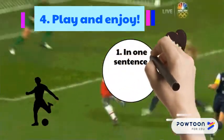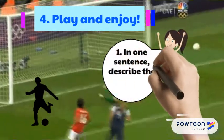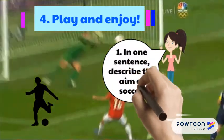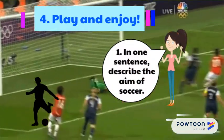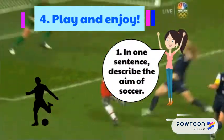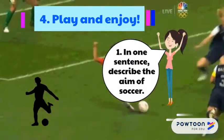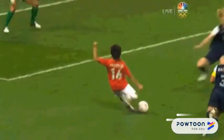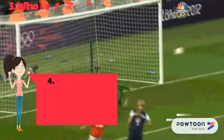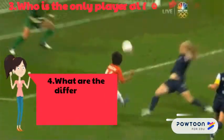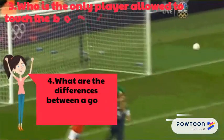Questions for Activity 1, asked by your teacher. Number 1: In one sentence, describe the aim of soccer. Number 2: How many people are in each team? Number 3: Who is the only player allowed to touch the ball with their hands while playing?